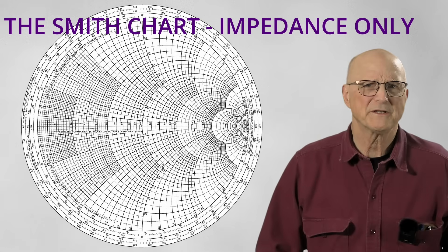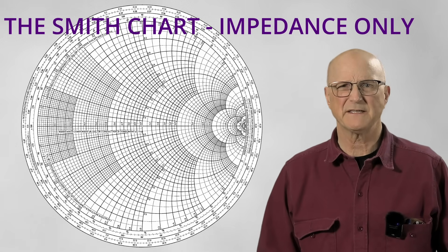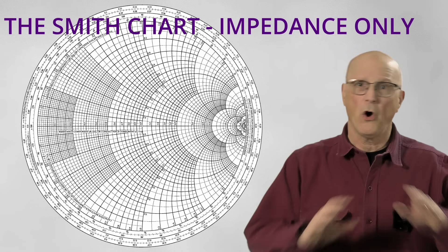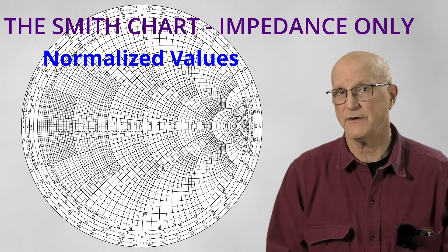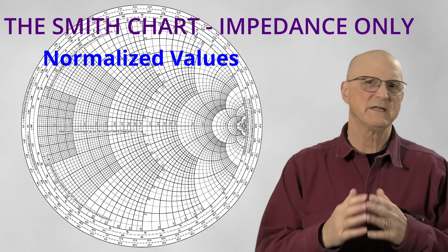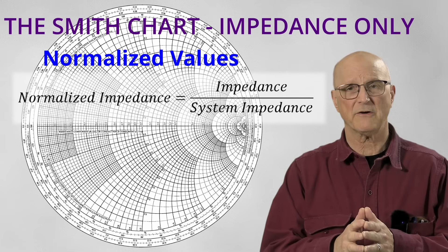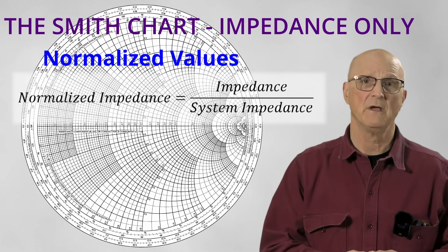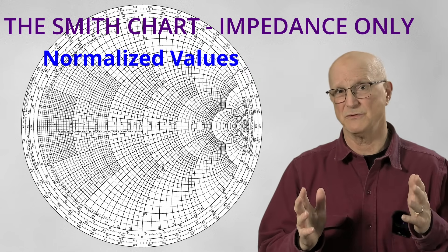To that end, let's tiptoe into the world of the Smith chart in preparation for designing impedance matching circuits. Well, I'm going to start with the basic impedance only Smith chart, as it is far less intimidating. To begin with, we have to remember that all of the values as shown in the Smith chart are normalized values. So what is a normalized value?